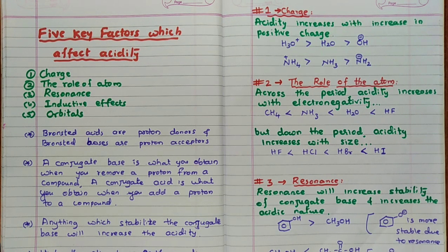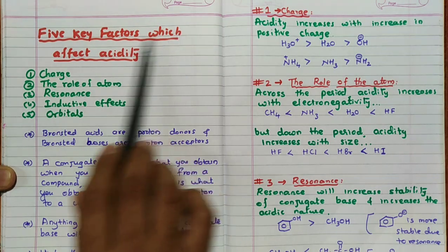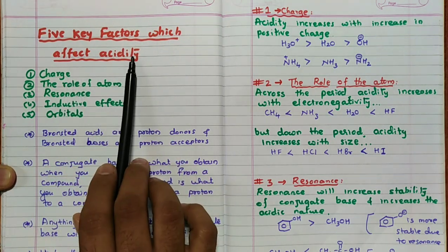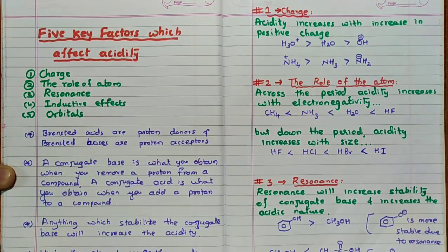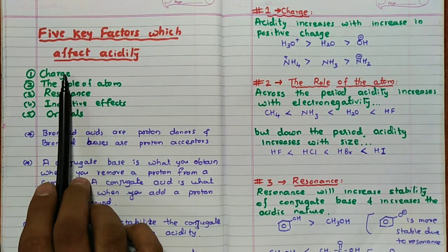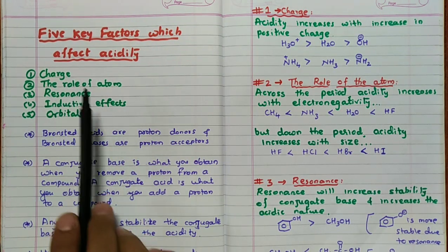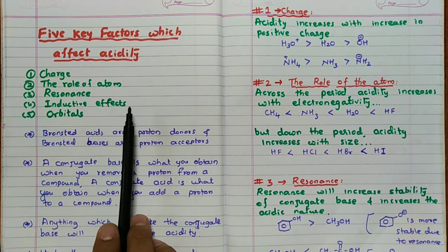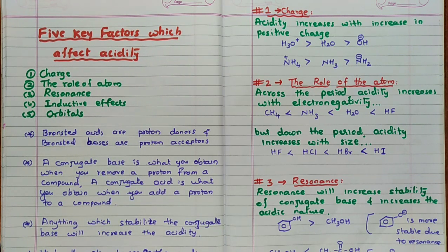Hello students, welcome to RH Chemistry. In today's small video, let us discuss about five key factors which affect the acidic nature in organic compounds. Those five factors are charge, role of atom, resonance, inductive effect, and orbitals. Before going to discuss in detail about these five points, first we will see some basic knowledge about the acidic nature.